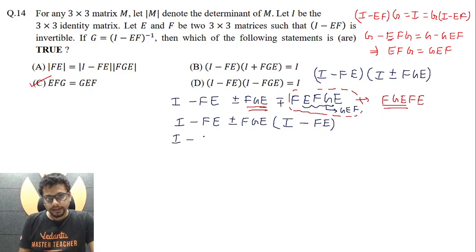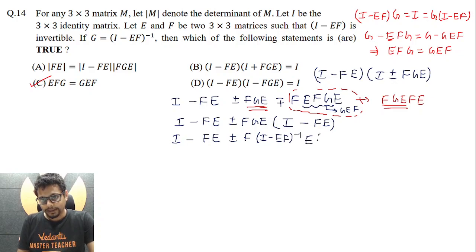Now here G is (I - EF) inverse. (I - EF) inverse. E (I - FE). So what does this become?